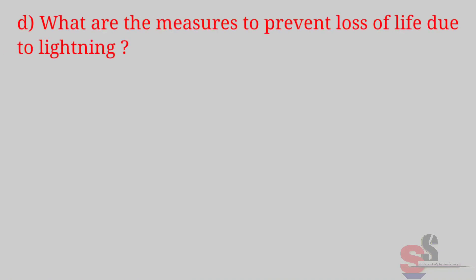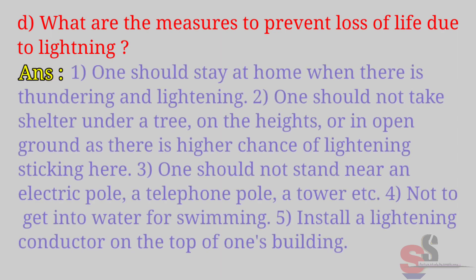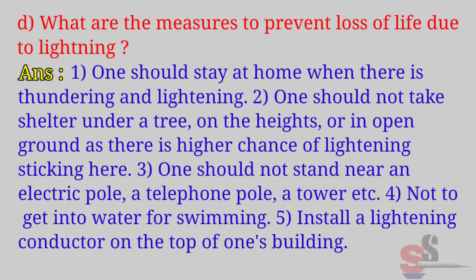D. What are the measures to prevent loss of life due to lightning? Answer: One should stay at home when there is thundering and lightning. One should not take shelter under a tree, on heights, or in open ground, as there is a higher chance of lightning striking there. One should not stand near an electric pole, a telephone pole, or a tower. Not to get into water for swimming. Install a lightning conductor on the top of one's building.